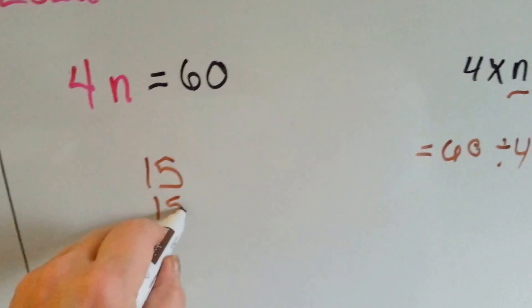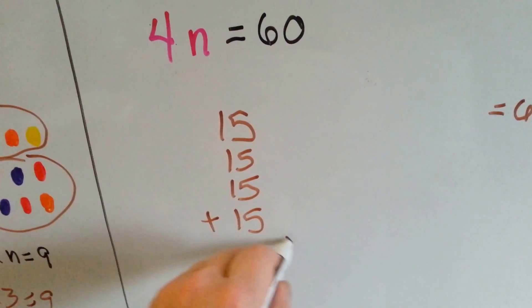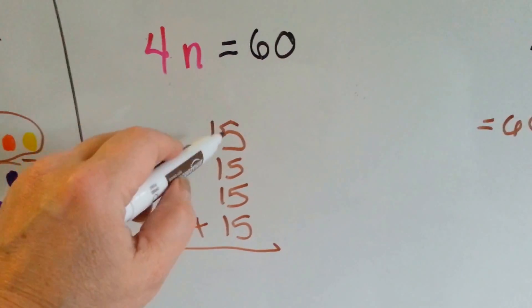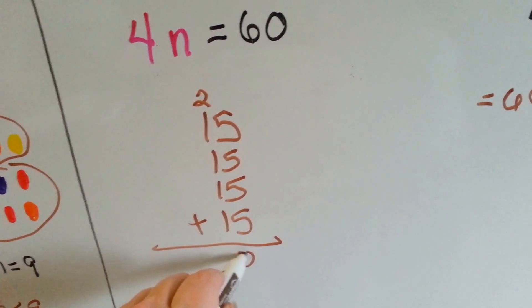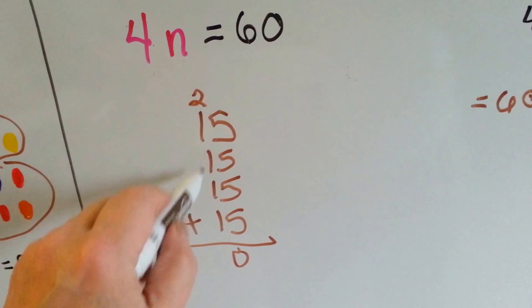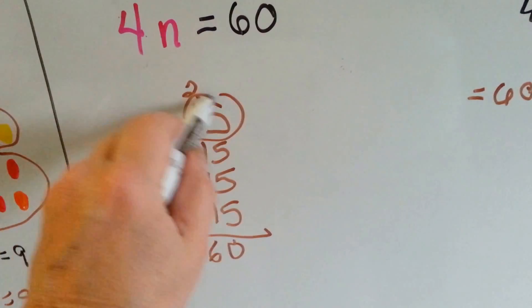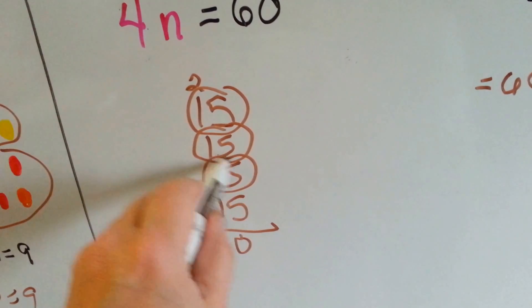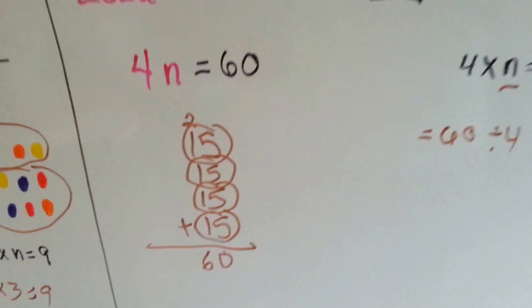If we took 15 four times, five, ten, fifteen, twenty, carry the two, put the zero down. Two, three, four, five, six. See? Each one of these added together makes 60.